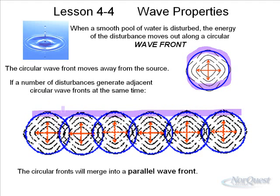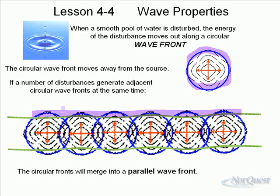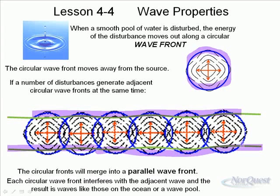What happens is each circular wave front interferes with adjacent waves. From side to side they cancel out, but going away from the source they interfere positively with each other and reinforce this front, going in both directions from the source. The result is waves like those on the ocean or in a wave pool. This is called a wave front.